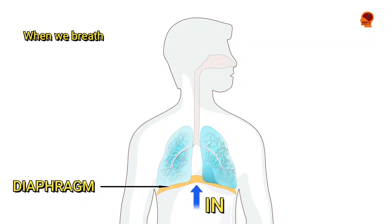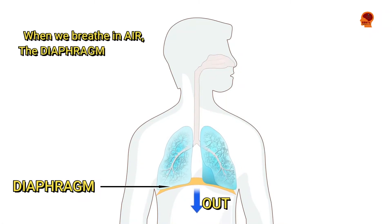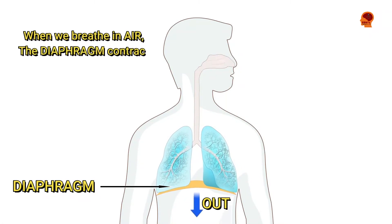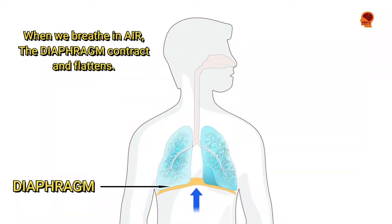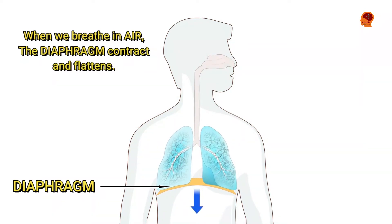The respiratory center in the medulla oblongata is responsible for this regulation. When we breathe in air, the diaphragm contracts and flattens. It decreases the pressure inside the thorax, and consequently the lungs expand and air is sucked in.